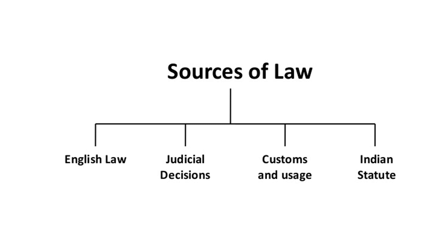Examples of Indian statute law include: the Indian Contract Act of 1872, the Sale of Goods Act of 1930, the Indian Partnership Act of 1932, the Negotiable Instruments Act of 1881, and the Companies Act of 1856. The year next to the names of those laws indicates when exactly the law came into being. Number three: judicial decisions. Past judicial decisions of English courts and Indian courts also become a source of law.